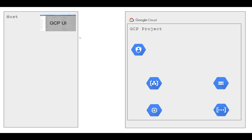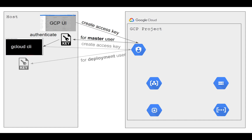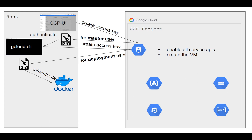We will start by using the UI to create a GCP project and also to create a master service account that has the owner permissions — meaning it can do everything on the project that we just created. We will use that key to authenticate our local gcloud CLI tool. From there, we will create an access key for a new service account called the deployment user, enable all service APIs, and create the virtual machine. From there, the flow looks exactly as before.